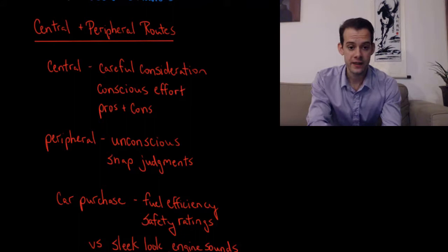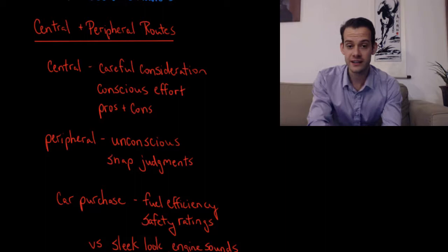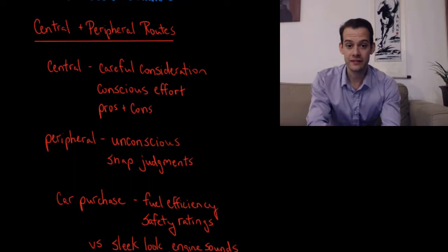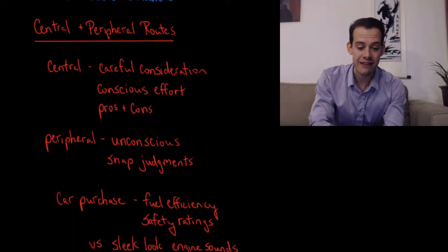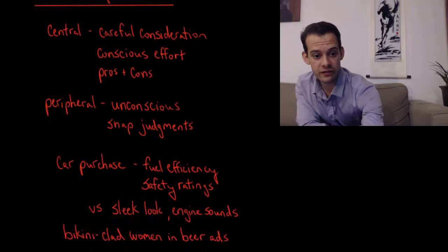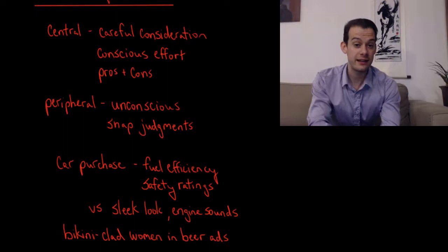We might think about an advertisement for a particular model of car. If the advertisement is telling us about the fuel efficiency of the car or the safety ratings, then it's appealing to this central route to persuasion. If however the ad consists of the sleek look of the car driving through a beautiful landscape and the sounds of the engine revving, then it's appealing more to the peripheral route to persuasion. And it probably won't surprise you to consider that most advertising is using this peripheral route to persuasion.